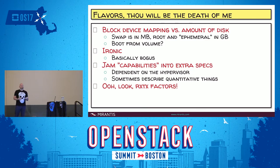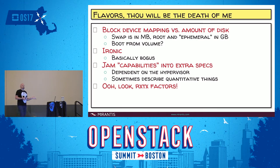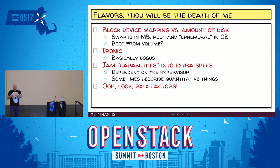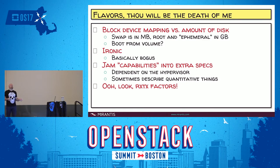For some reason, swap is in megabytes and everything else is in gigabytes. With boot from volume, the amount of root disk consumed should be zero, so there's a bunch of conditional code throughout flavor handling for things like boot from volume. For Ironic, the flavor is kind of useless — when you launch an Ironic instance, you're getting an indivisible unit, not 4 vCPU and a bunch of disk and memory. We jam capabilities into extra specs, which tend to be a wild west, free-form type of thing — not standardized. Things like receive and transmit factors, who knows if they actually work.